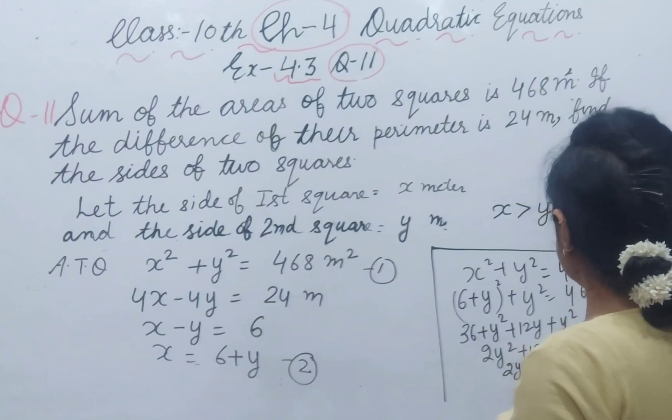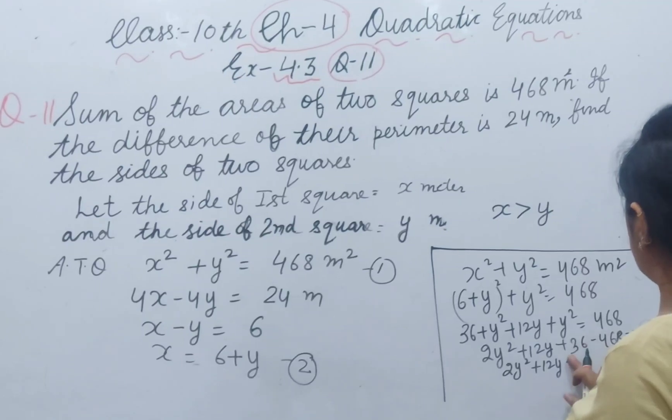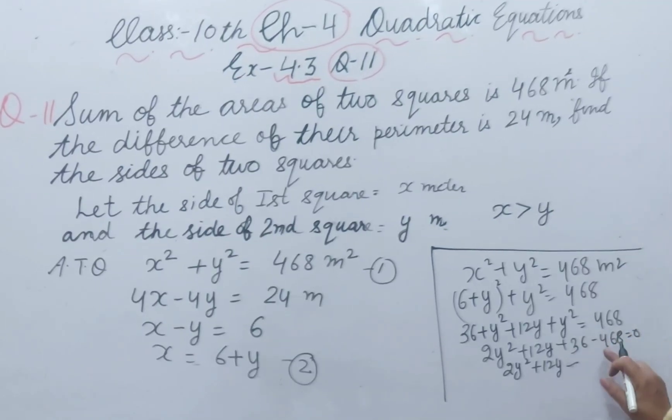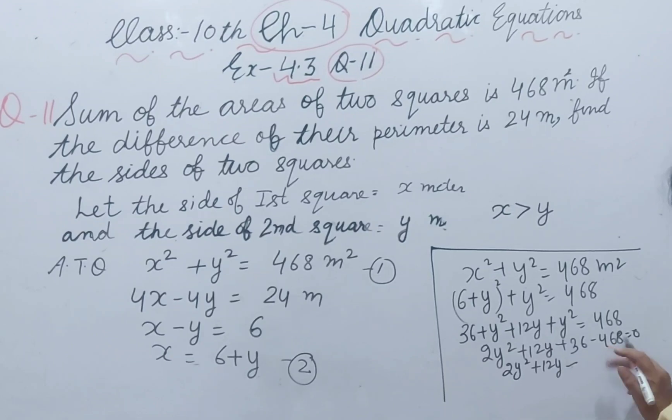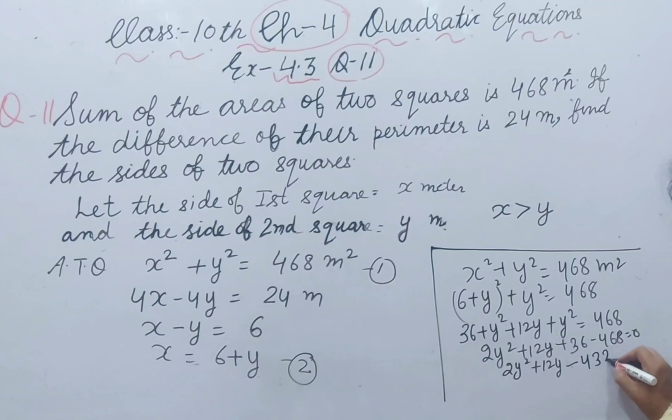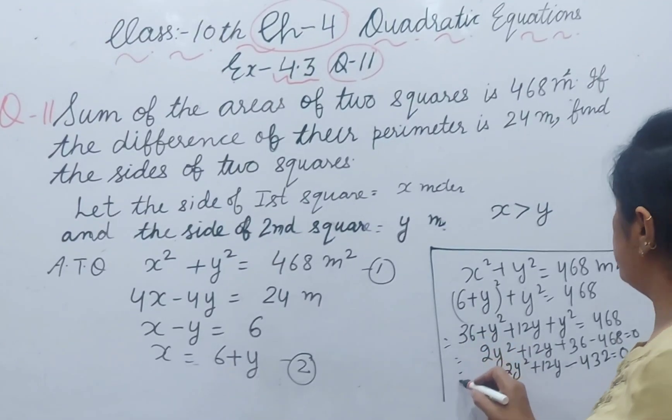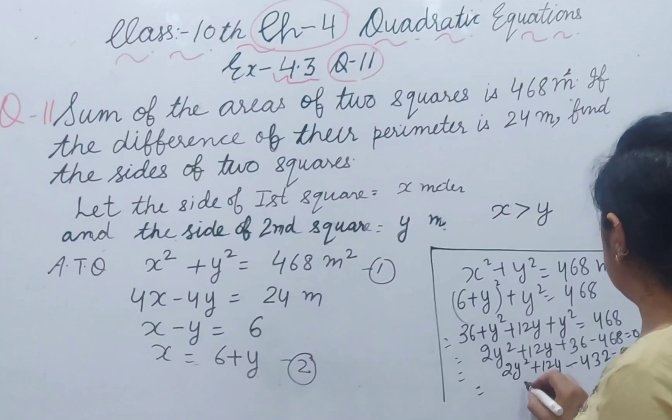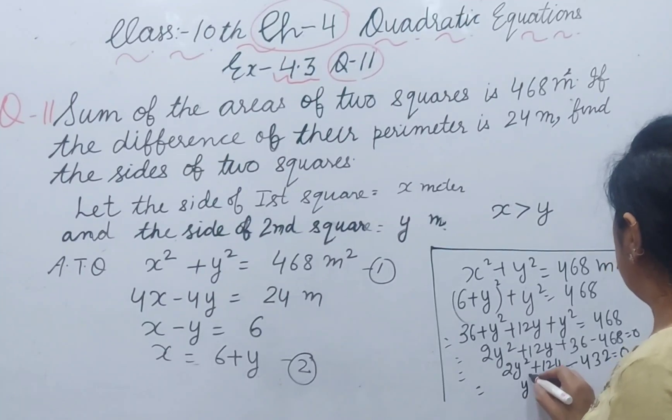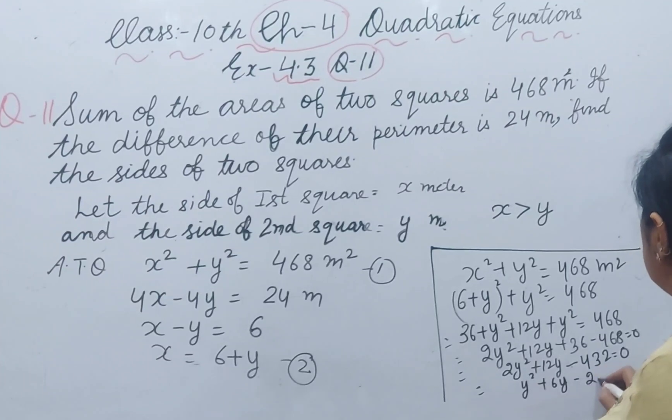2y square plus 12y minus 432 equal to 0. All the equation divided by 2, you will get y square plus 6y minus 216 equal to 0.